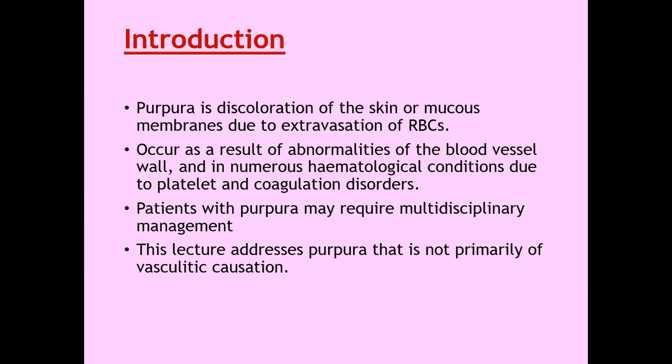Introduction. Purpura is the discoloration of the skin or mucous membranes due to extravasation of RBCs. It occurs as a result of abnormalities of the blood vessel wall and in numerous hematological conditions due to platelet and coagulation disorders. So generally, oozing of blood from the vessels is caused by either some defect in the blood vessels, some defect in the coagulation cascade, or some defect in the platelets. Patients with purpura may require multidisciplinary management. This lecture addresses purpura that is not primarily of vasculitic origin, mainly covering the non-inflammatory causes of purpura.